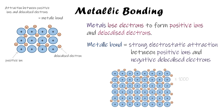This is what the giant metallic structure would look like. Just like ionic bonding, you've got many thousands of atoms joined together in rows forming this giant metallic lattice, held together by that attraction between the ions and the electrons.